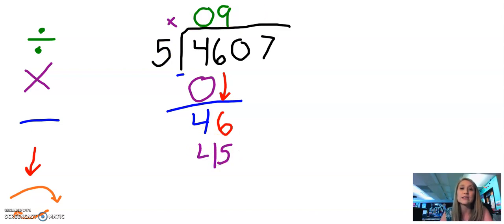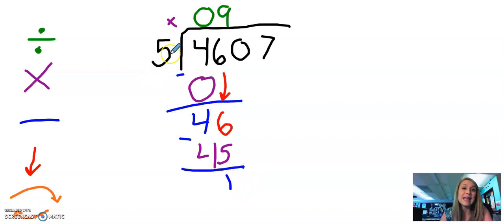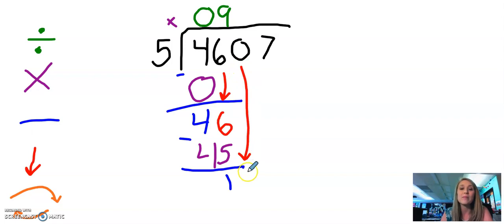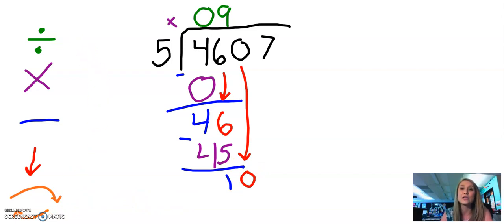Nine times five is 45. Now I can subtract: 46 minus 45 equals one. And I ask myself, is one less than five? It is, so I can keep going. I'm going to bring down my zero, turning my one into a 10. And then I bring it on back and start the process over again.